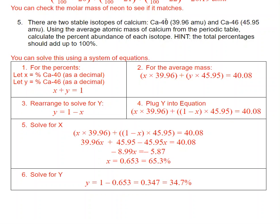So I know that if I add x and y, that should equal one, or if I add x and y as percents, it should equal 100%. I also know that I need to multiply that decimal percent by the mass for each of these in order to get the average. So I'm going to rearrange this equation to solve for y, and then I'm going to plug y into my equation.